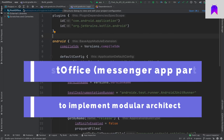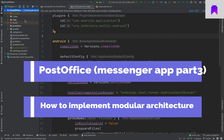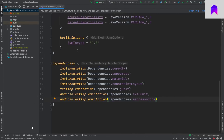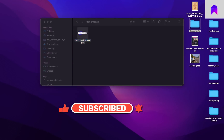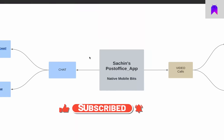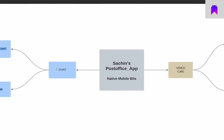Now we are done with one very basic setup. Let's open our application architecture design and see how we need to proceed. The first feature we are going to start will be chat, so let's implement a new module inside our post office application.